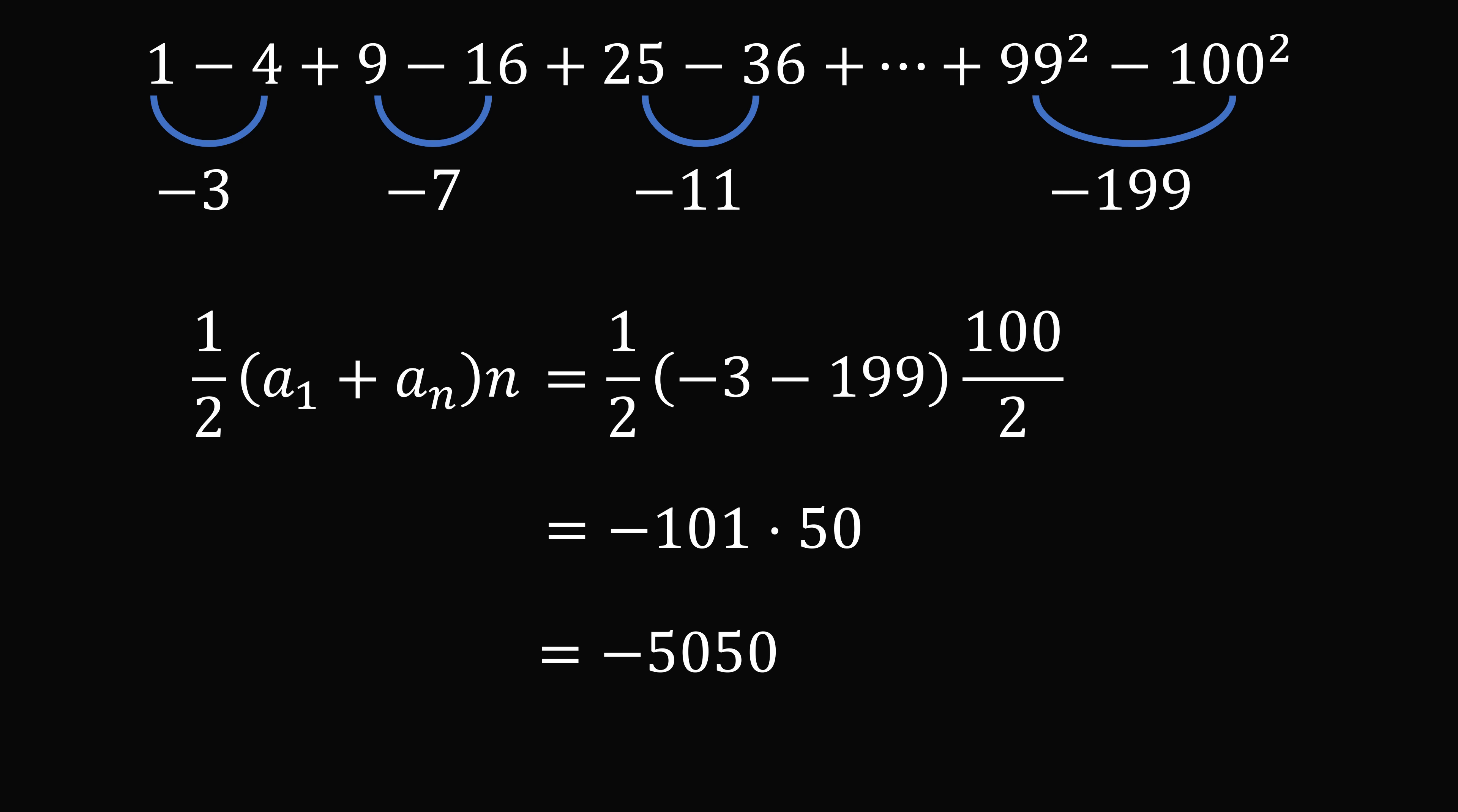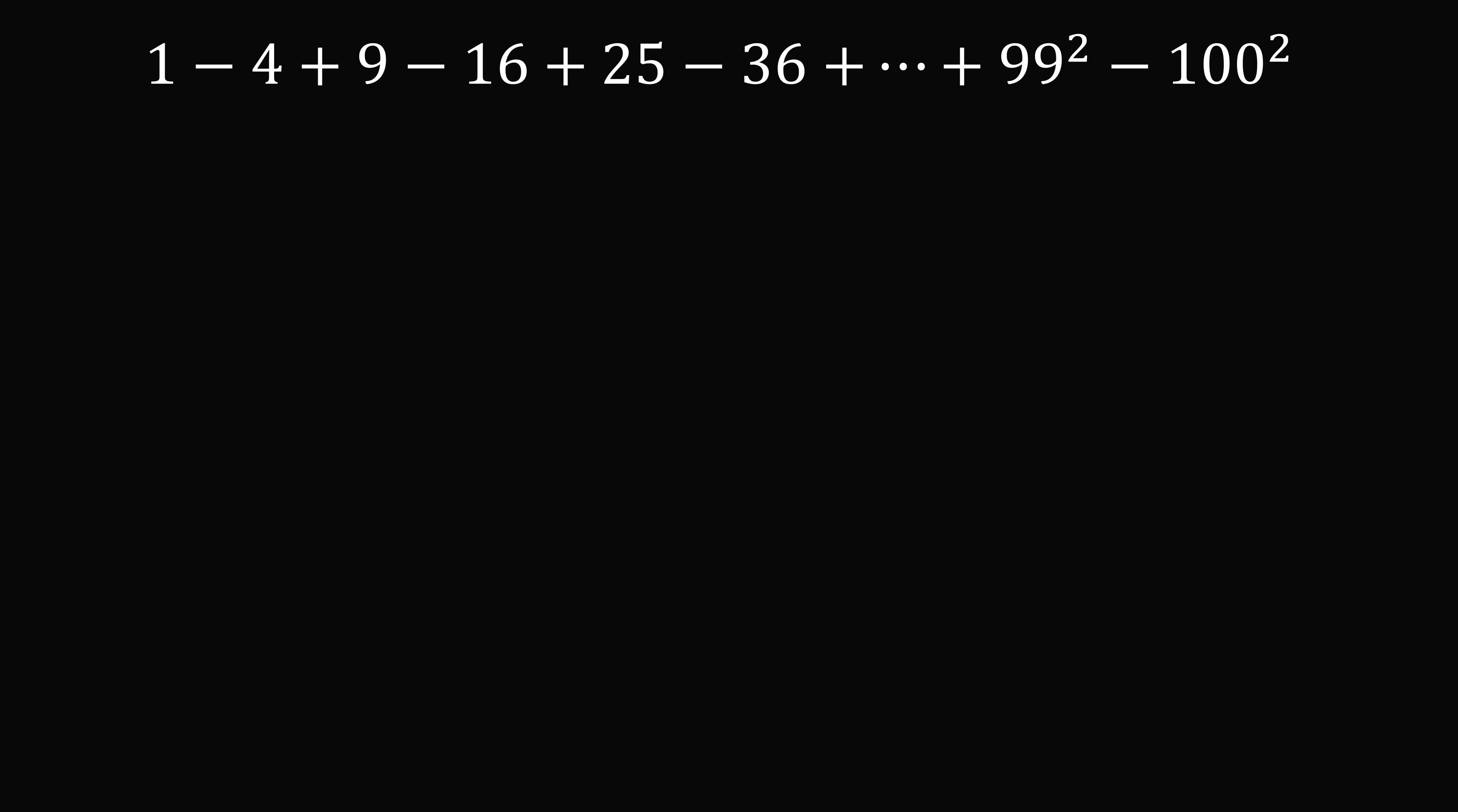This is one way to solve the problem. I'm now going to present another way. We will directly write the sum as an alternating sum of squares: 1 squared minus 2 squared plus 3 squared minus 4 squared and so on until 99 squared minus 100 squared.